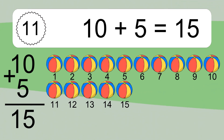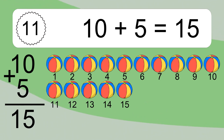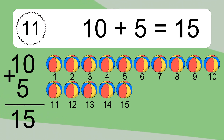10 plus 5 equals what? 10 plus 5 equals 15. Let's count it: 1, 2, 3, 4, 5, 6, 7, 8, 9, 10, 11, 12, 13, 14, 15.